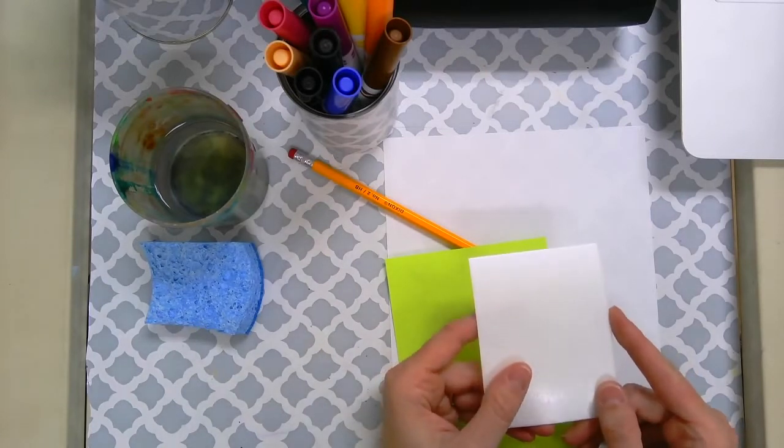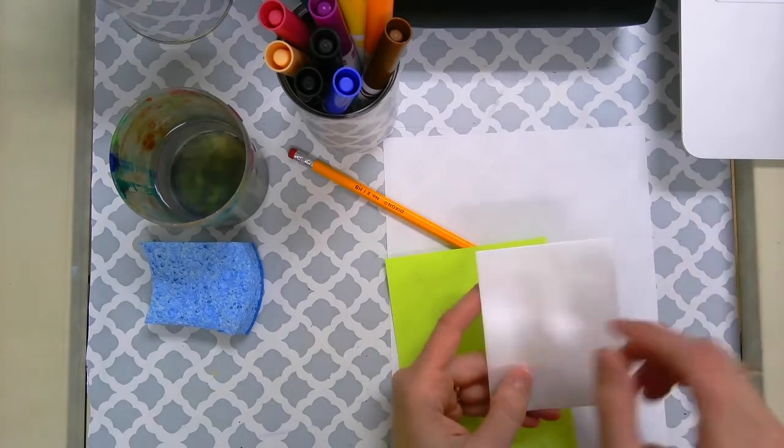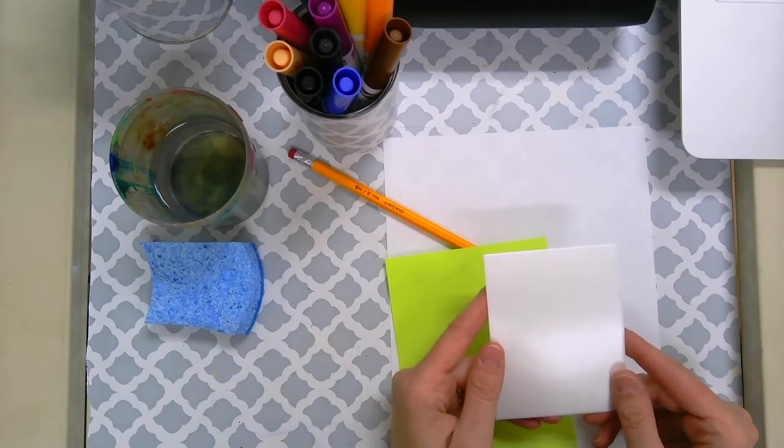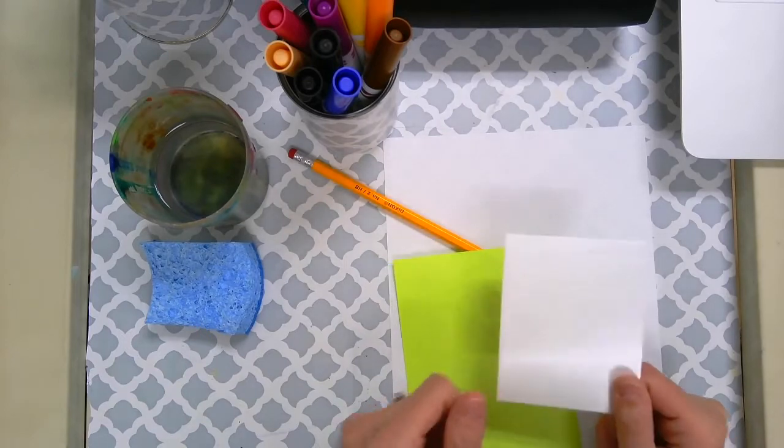Now styrofoam you can find it easily by just getting like styrofoam plates and then maybe cutting a piece out of that, like the bottom part out, so that you can carve into it. We're going to be using that styrofoam as our art print today.